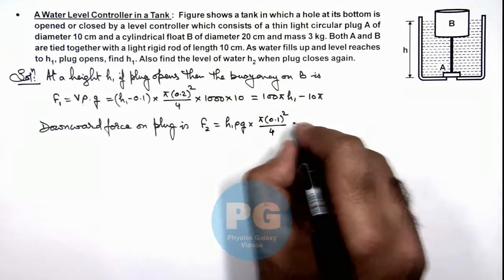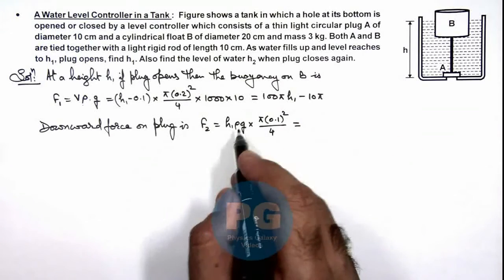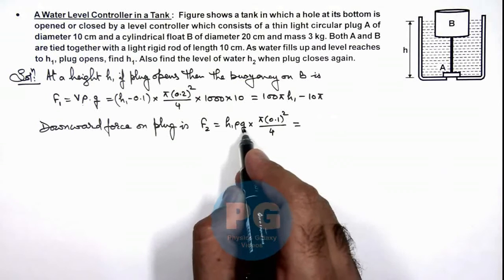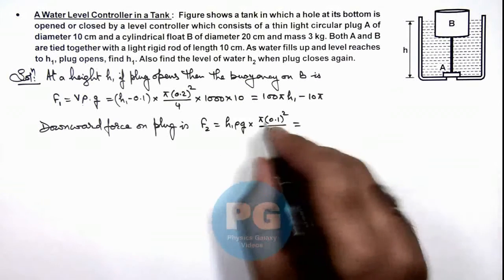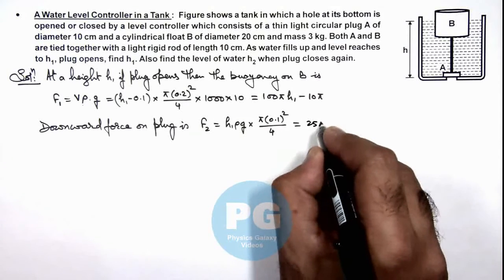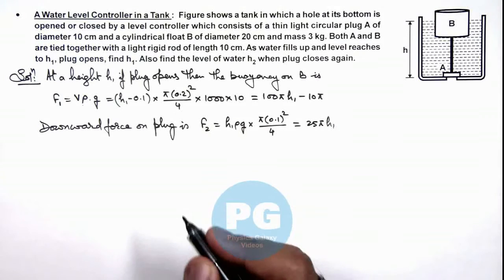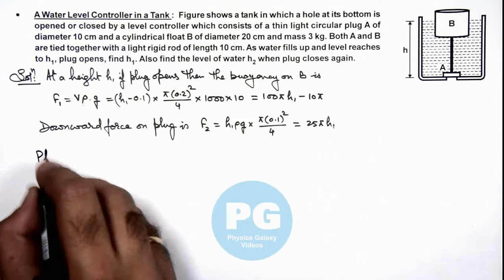Numerically with ρ taken as 1000 and g as 10, this will be 25π h₁. And we can say plug will open.